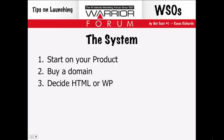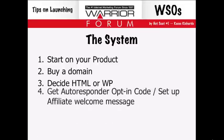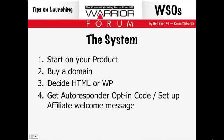Then decide whether you're going to go HTML-based or WordPress. If you're going WordPress, you should know something about WordPress and what theme you'll use. If you're going HTML-based, you should know HTML or CSS, or have a template to base it off. Then go into your autoresponder — AWeber, iContact, or GetResponse — and get the opt-in code for the form you'll use on your JV or affiliate page.